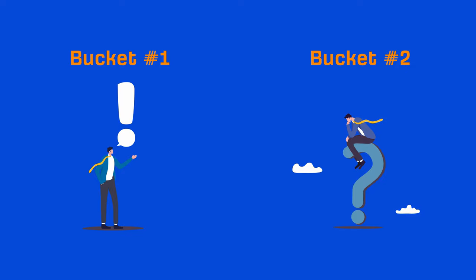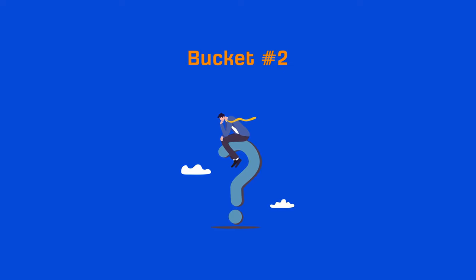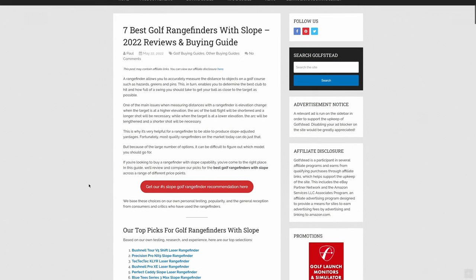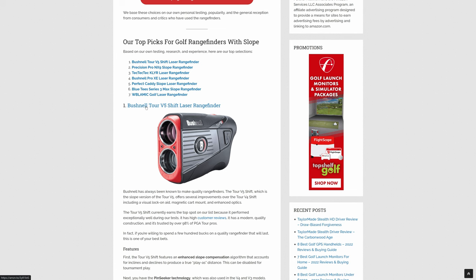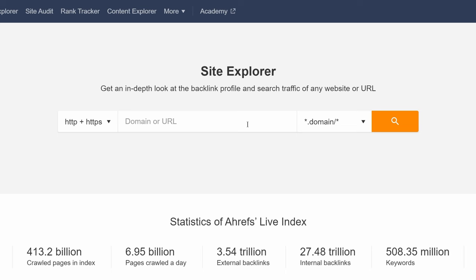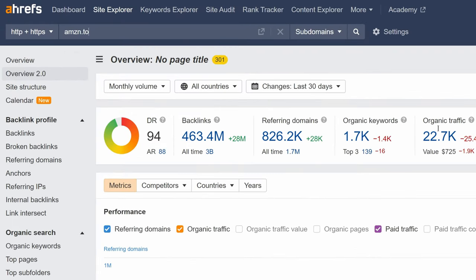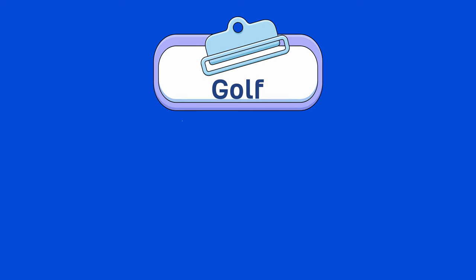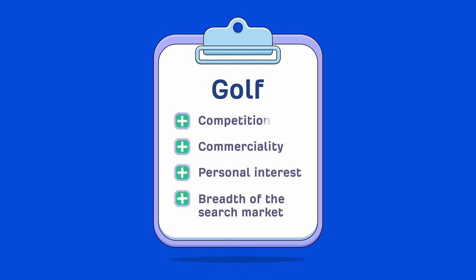Now let's talk about finding and qualifying niches if you're not quite sure of the topics you want to cover. There are two effective ways to find niches. The first is to look at the sites that are linking to a big affiliate program like Amazon. For example, that golf affiliate site we found earlier is an Amazon affiliate — if you hover over one of the affiliate links, you'll see the link points to a page on the domain amzn.to, which is Amazon's shortened URL. With that domain in hand, go to Ahrefs Site Explorer, type in the URL amzn.to, and run the search. Then head to the backlinks report, which will show us all pages that link to this website.